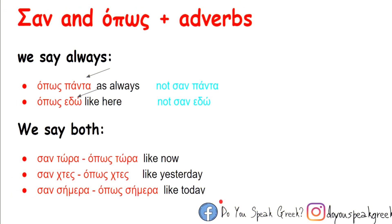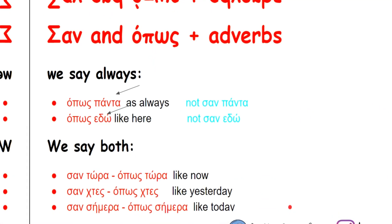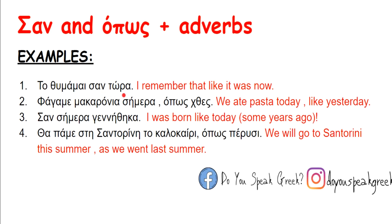We can also use σαν and όπως with adverbs. We always say όπως πάντα and not σαν πάντα — that's incorrect in Greek. Similarly, we say όπως εδώ and not σαν εδώ. However, both forms work with words like τώρα, χτες, and σήμερα. For example: Το θυμάμαι σαν τώρα. Φάγαμε μακαρόνια σήμερα όπως χθες. Σαν σήμερα γεννήθηκα. Θα πάμε στη Σαντορίνη το καλοκαίρι όπως πέρυσι.